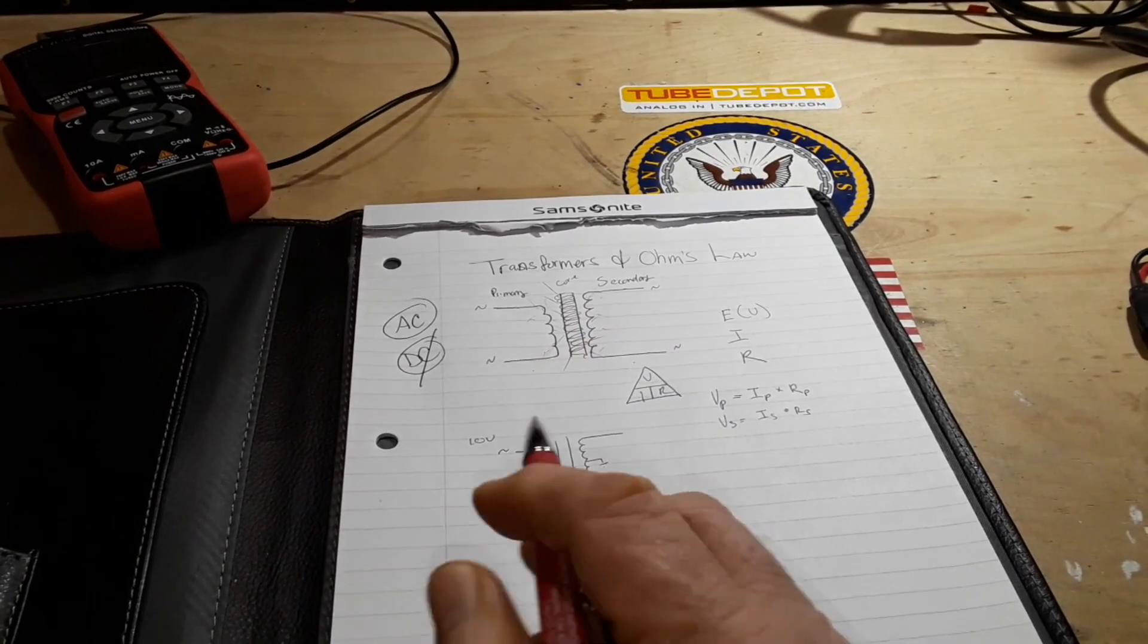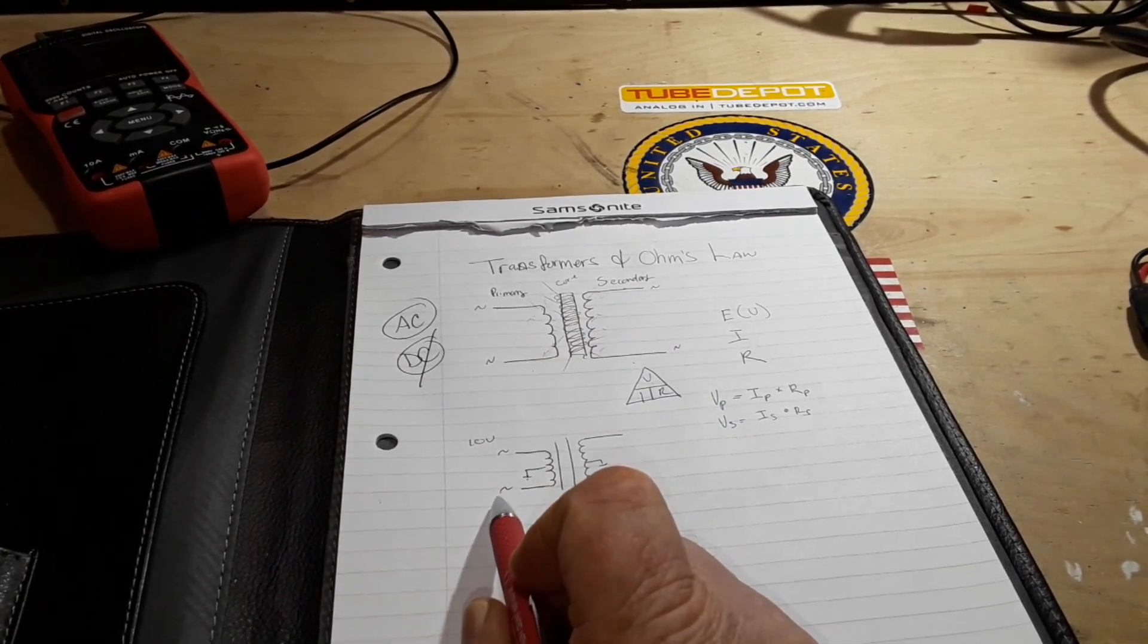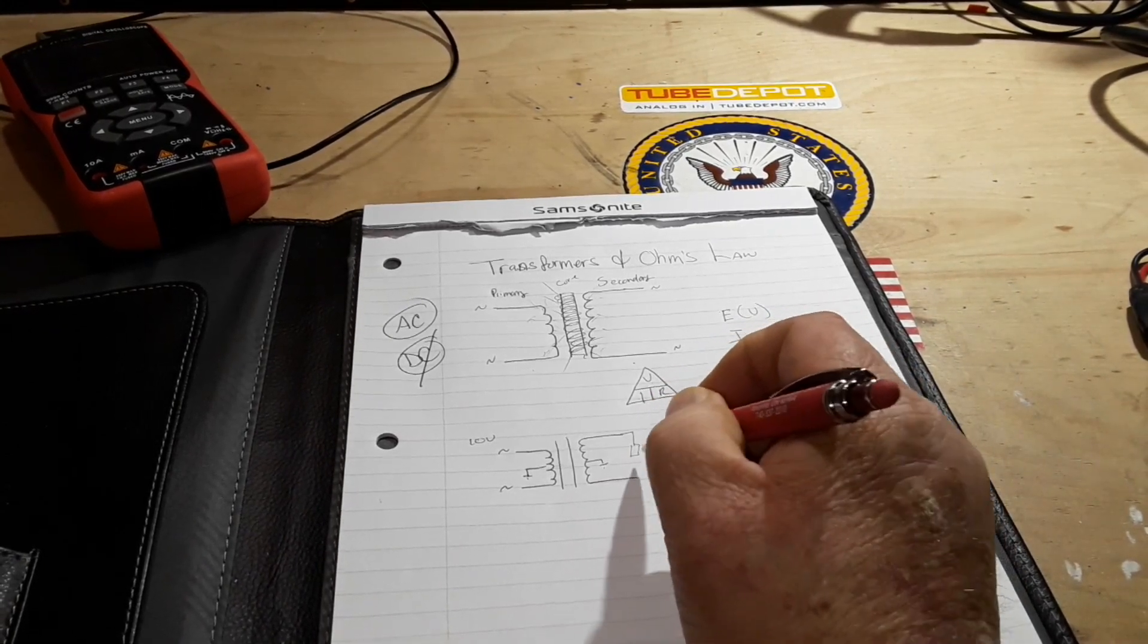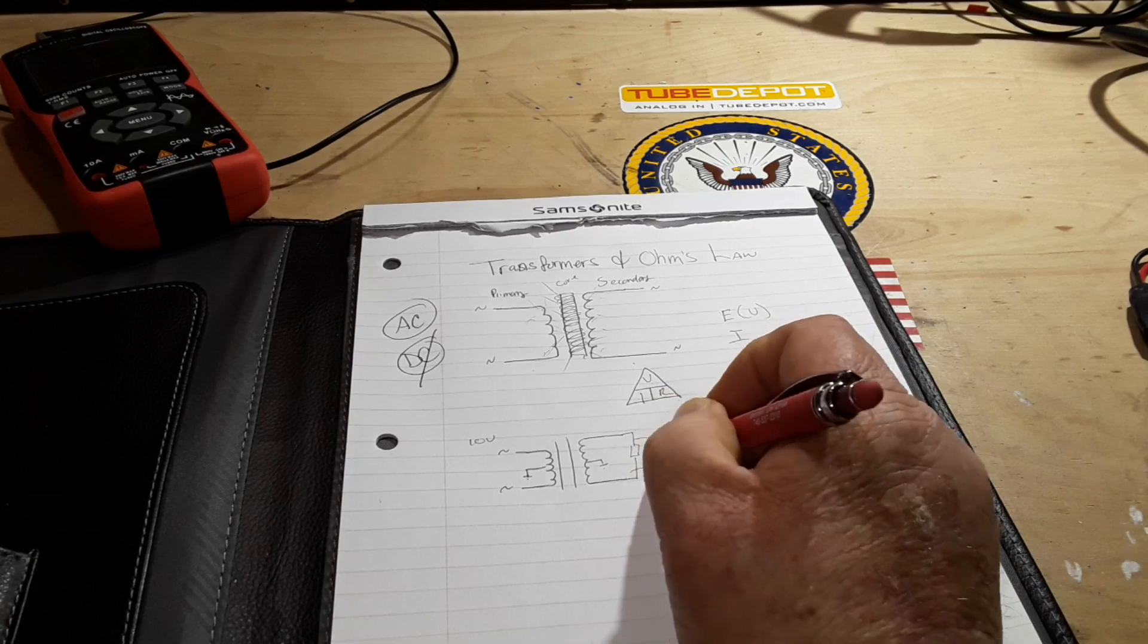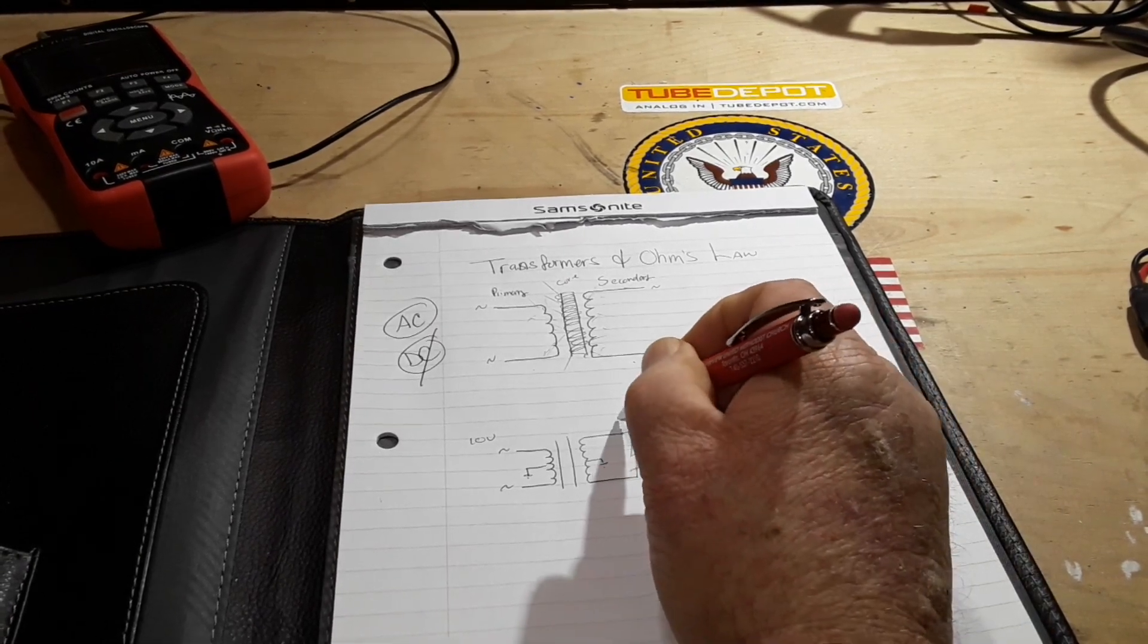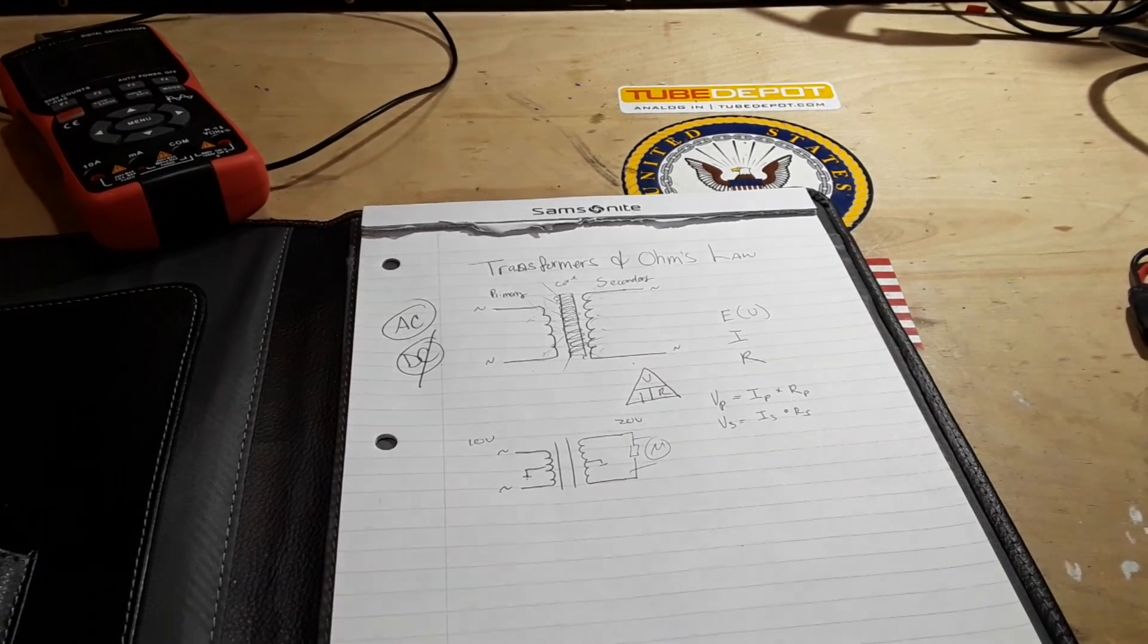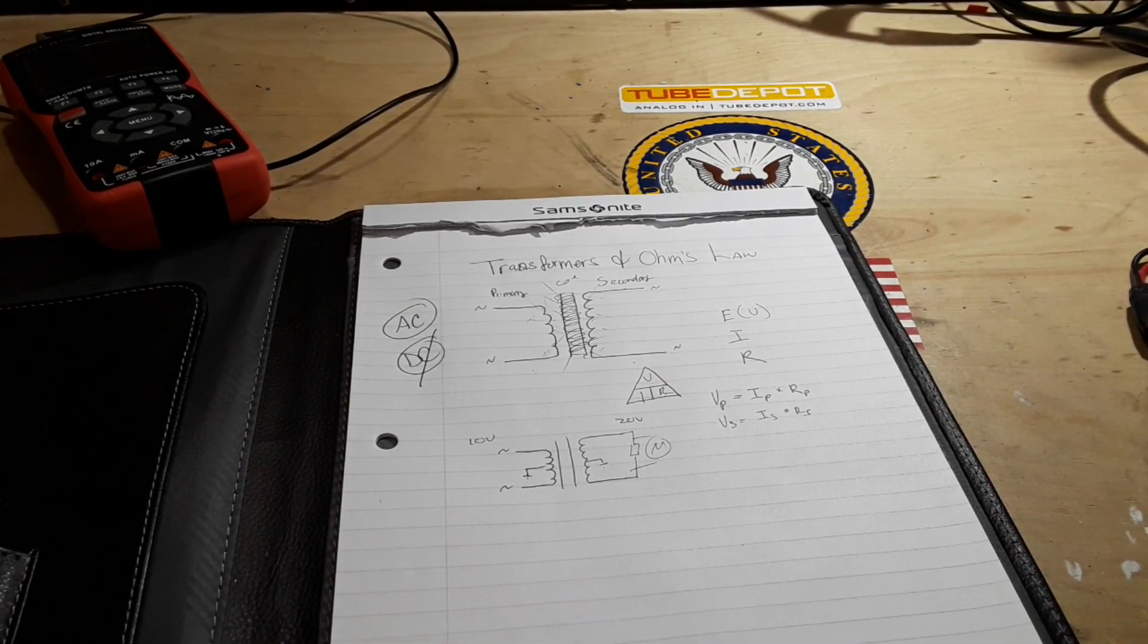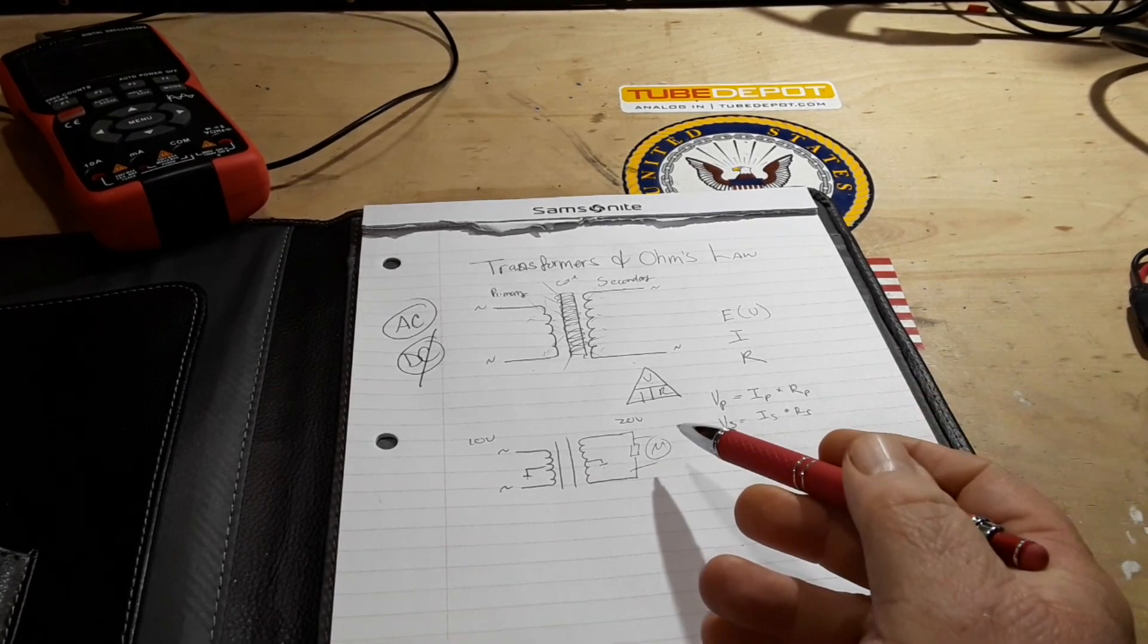But let's say we bring in 10 volts on this primary side and we hook up a load and a meter and we read 20 volts over here. So we basically doubled our voltage.